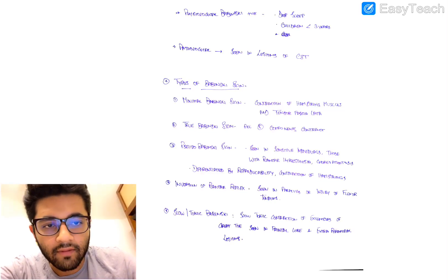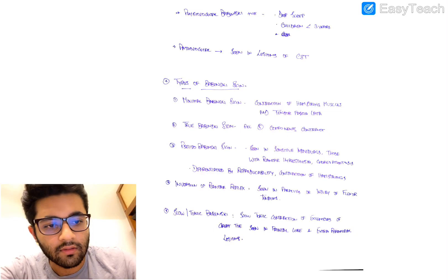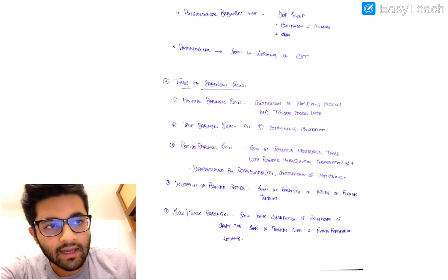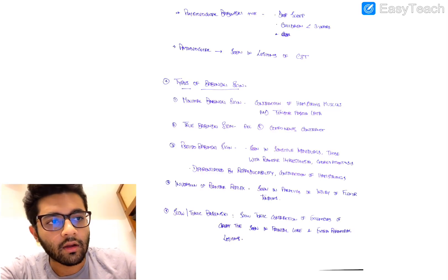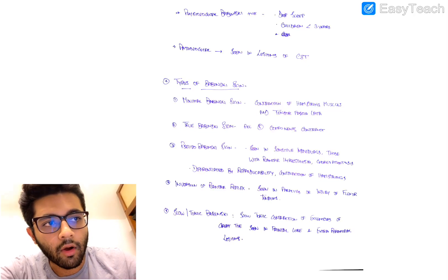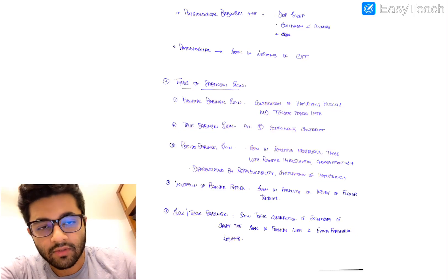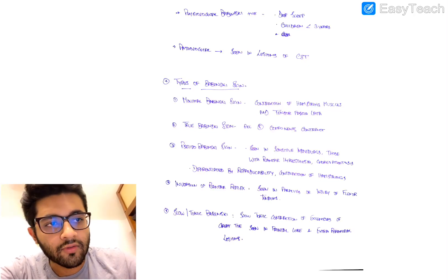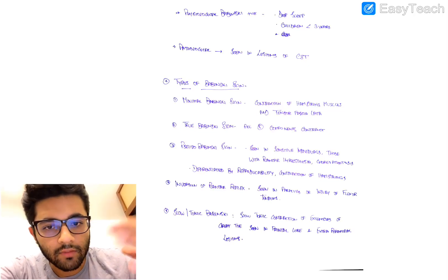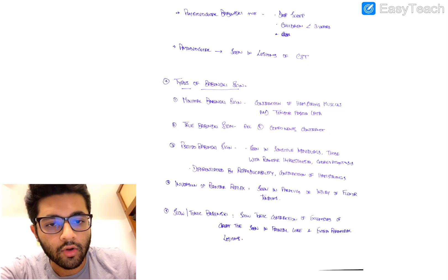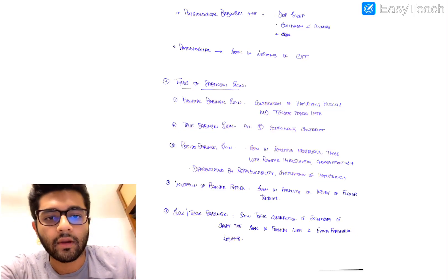A true Babinski sign, as discussed earlier, is when all five components — extensor hallucis longus, tibialis anterior, extensor digitorum longus, tensor fasciae latae, and the hamstrings — all contract together. Only when all five elements act together do you have a true Babinski response.